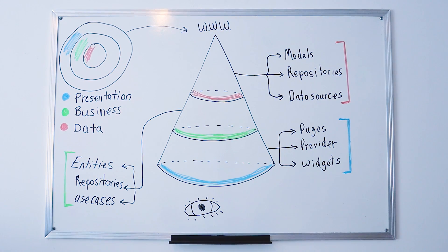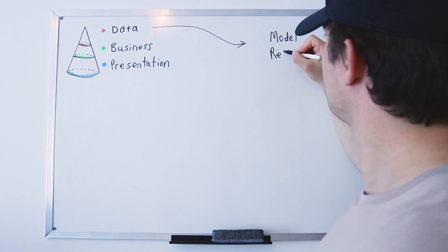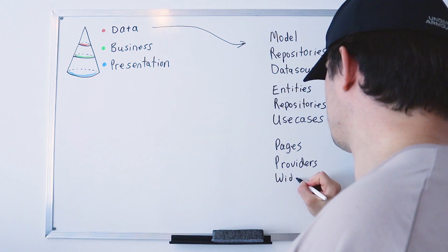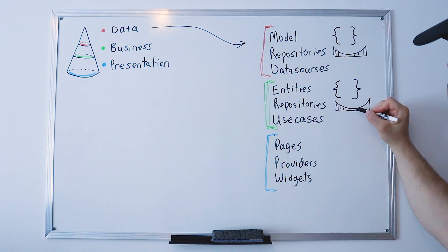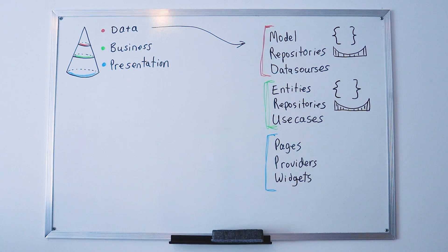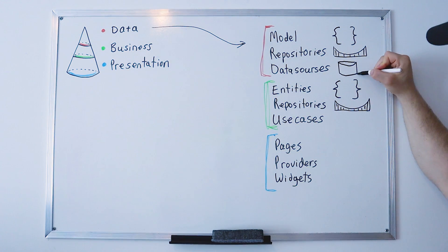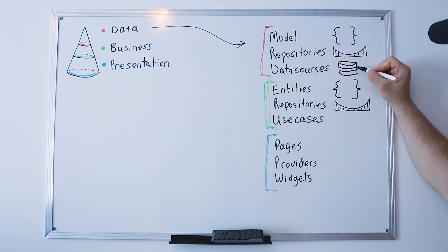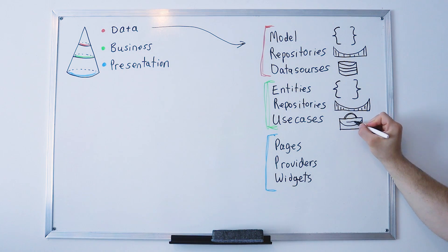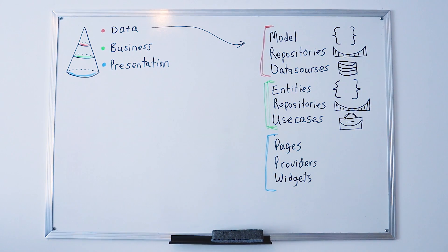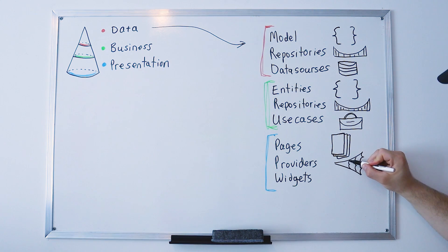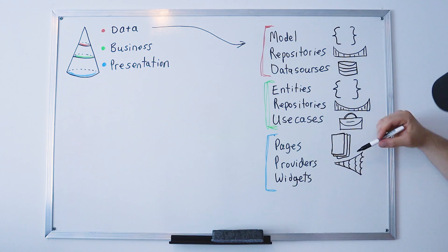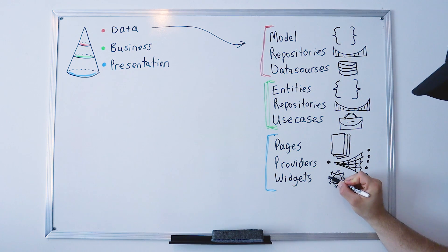To help remember the folder names, we'll associate every folder with an image. The models and entity will be represented by brackets. The repositories will be a bridge, because the two repositories act as a bridge between the data and business layers. The data source is represented by a database, the use cases by a business bag, the pages by some pages, the provider by a web, and the widget by its own symbol.